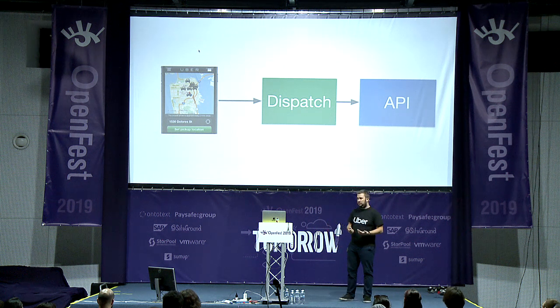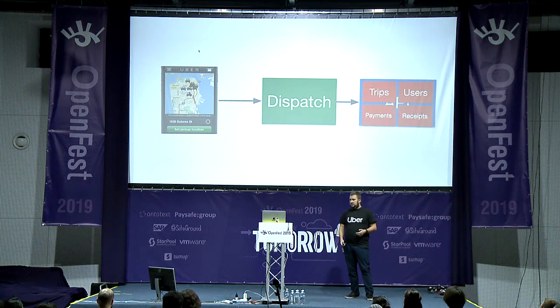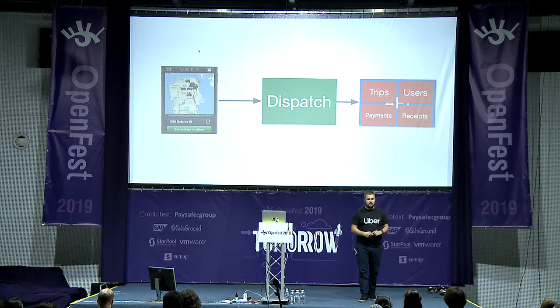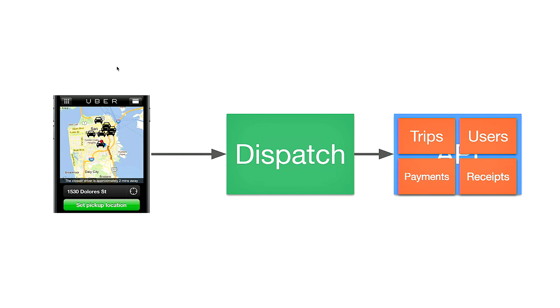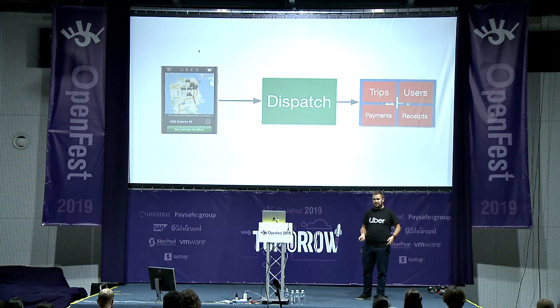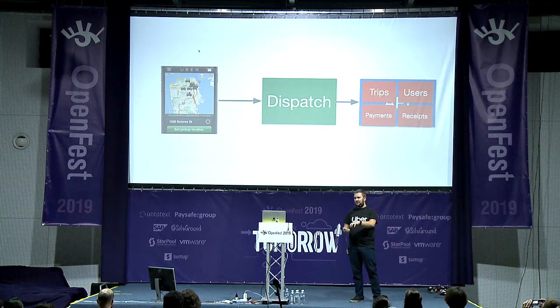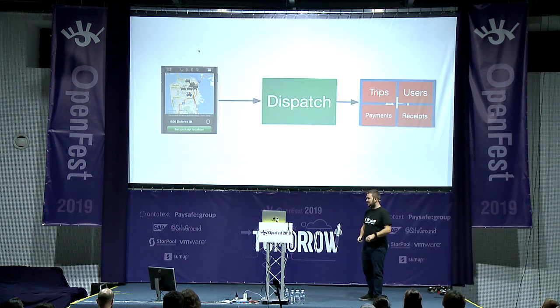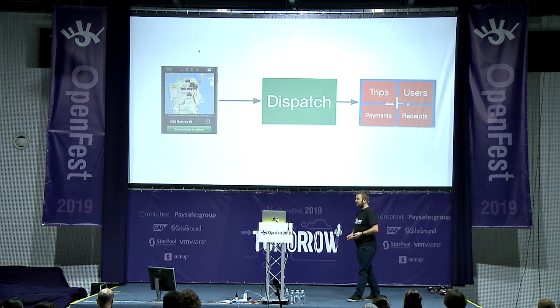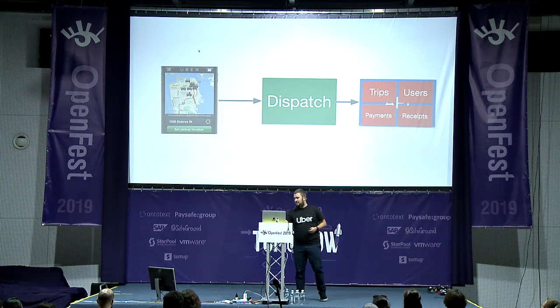Going back to the architecture — there was the dispatch service and the API service, and we decided it was time to split into microservices. The first step was just to split into components, because if you have one tightly coupled monolith and you transform it directly into microservices, you're going to end up with a spaghetti microservice architecture, which is bad. First you separate the components so you have clear, separated things to move to microservices.